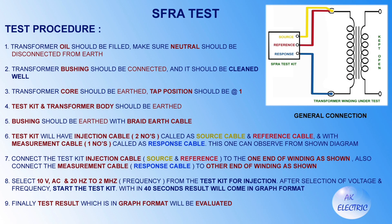For the SFRA test procedure: transformer oil should be filled; neutral should be disconnected from the earthing; transformer bushings should be connected and cleaned well; transformer core should be earthed; tap position should be at one; test kit and transformer body should be earthed; and bushings should be earthed with bright earthing cables. Connect the source and reference cables to one end of the winding and the response cable to the other end. Select 10 volt AC and 20 Hz to 2 MHz frequency, then start the test kit. Within 40 seconds the result will come in graph format.